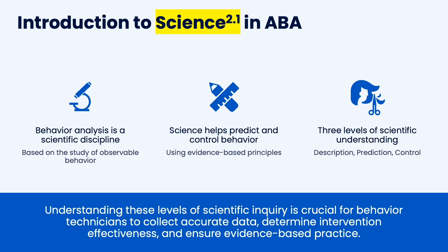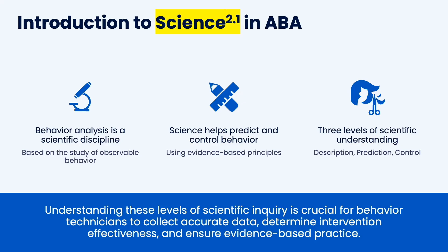These are the three levels of science. So in ABA, we're a scientific discipline. All our principles are based on observable behavior and have been put through multiple research studies to show that they are effective. Science can help predict and control behavior using evidence-based principles. We have three levels of understanding: description, prediction, and control.